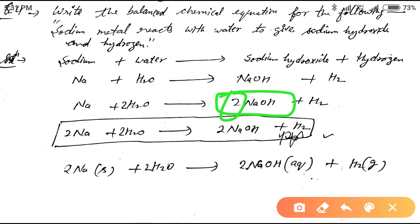...the number of hydrogens becomes four: two from NaOH and two from H₂. But on the reactant side the hydrogen count remains two, so we need to multiply H₂O by two as well. Now the number of hydrogen atoms becomes equal: four on each side.